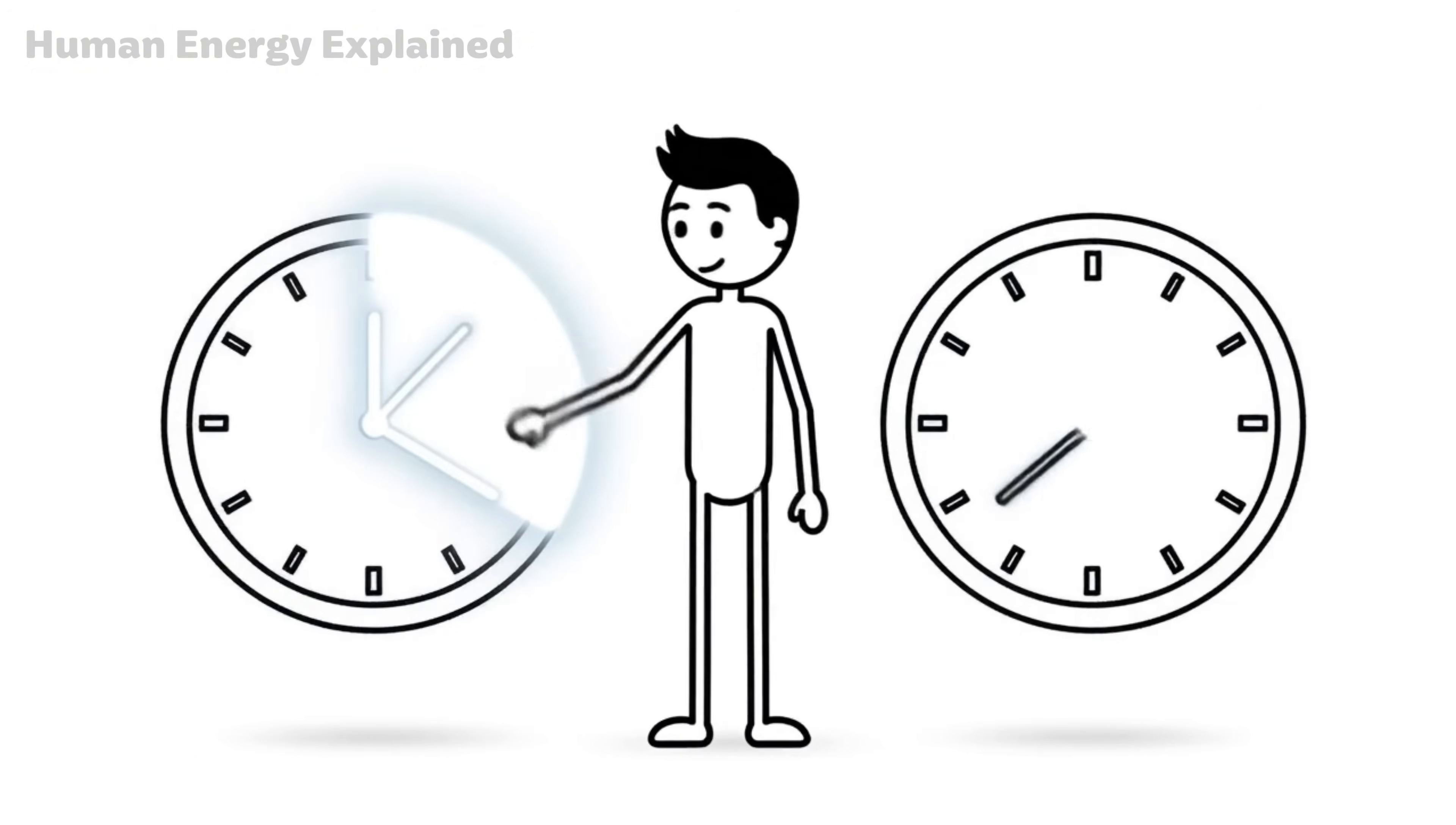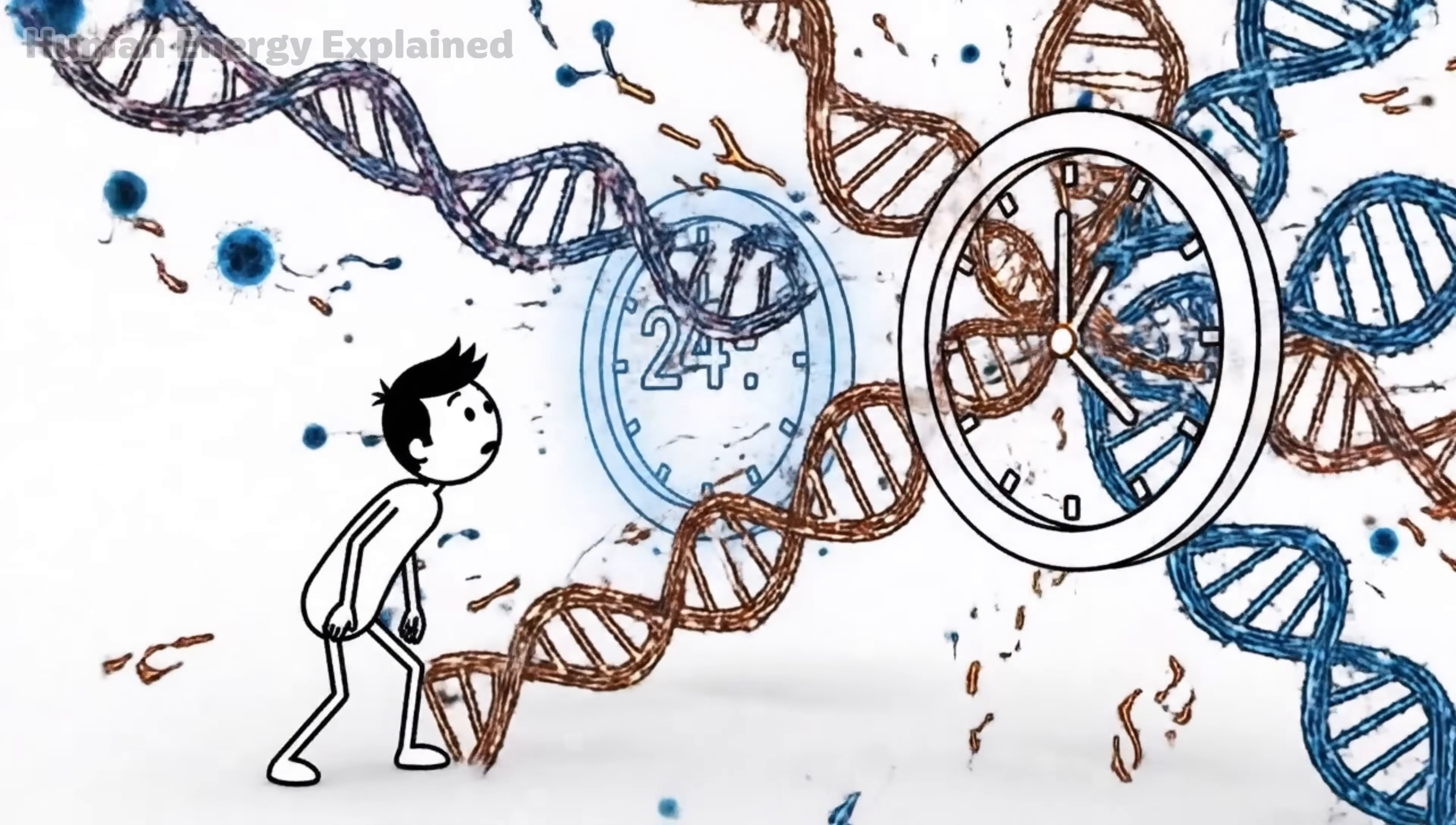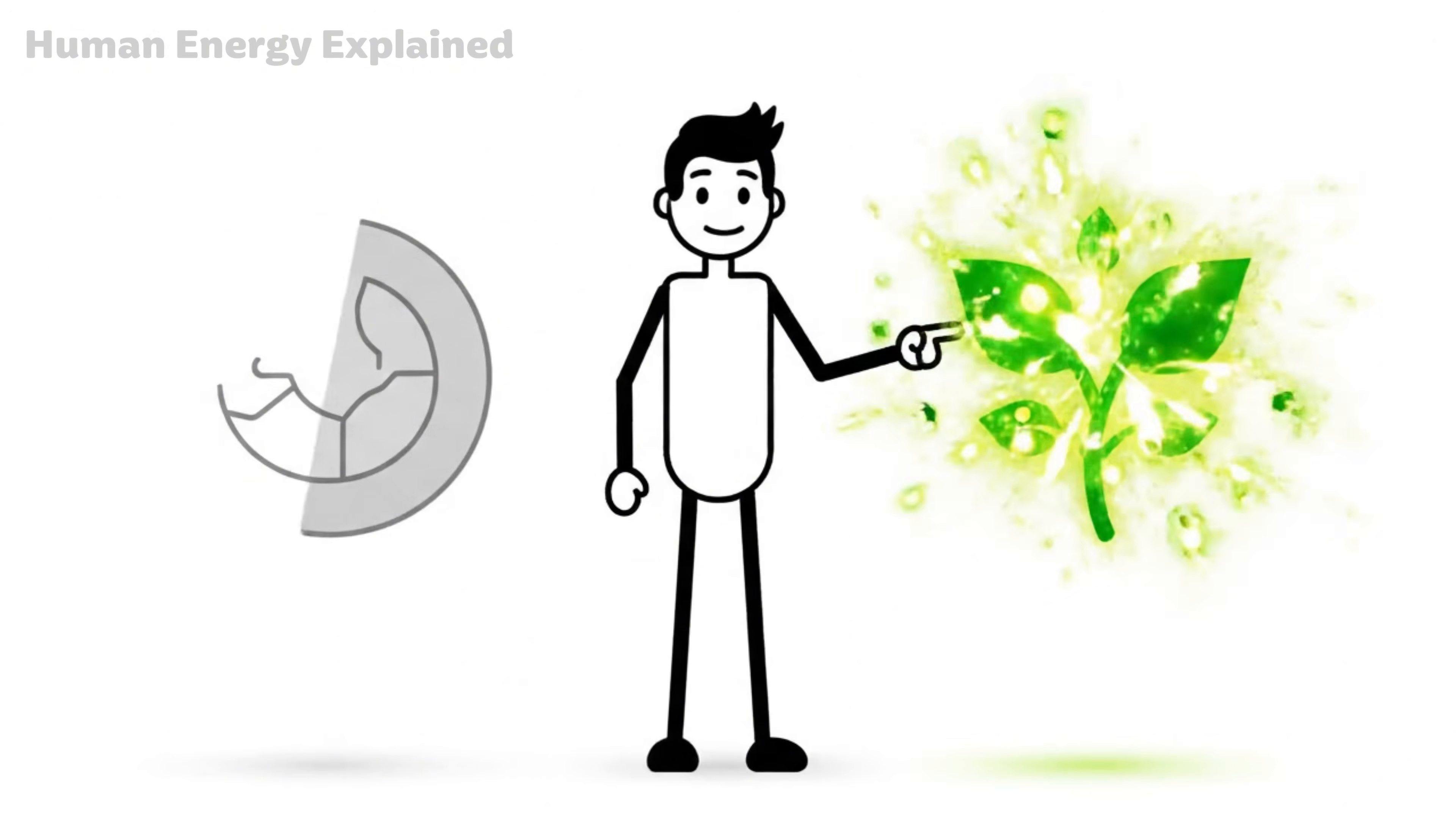At 12 hours, something shifts. At 16 hours, a switch flips. At 24 hours, your cells start cleaning house. And at 48 hours, that's when things get extraordinary. Today we're going inside your body's fasting timeline, hour by hour, to reveal exactly what's happening at each stage. Because the real question isn't how long you should fast. It's what do you want your body to do?